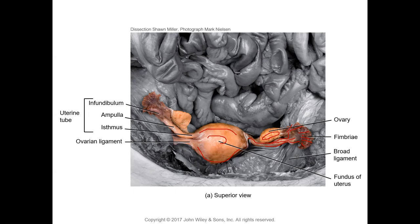The female reproductive system also consists of the vagina, the external genitalia, and the mammary glands. So we have the ovaries, the fallopian tubes, the uterus, the vagina, the external genitalia, the mammary glands, and other structures like the ligaments that support it.